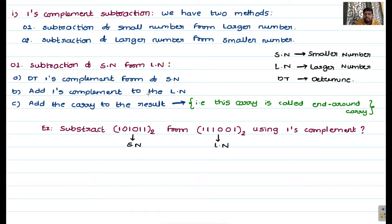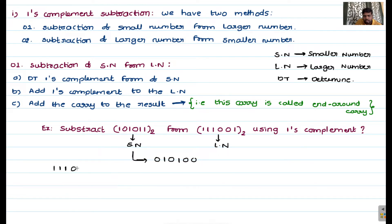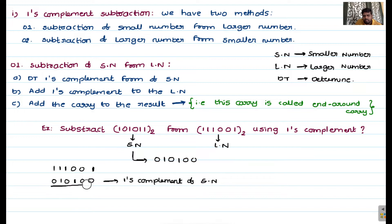The smaller number's one's complement is obtained by inverting all bit positions, giving 010100. Step one is complete — this is the one's complement of the given smaller number. Next, add this one's complement to the larger number. The larger number is 111001, and the one's complement of the smaller number is 010100.